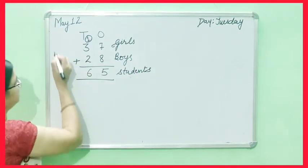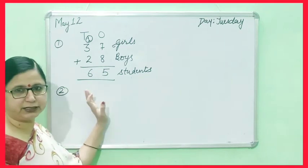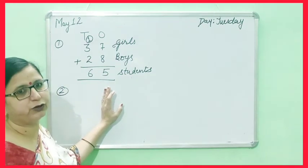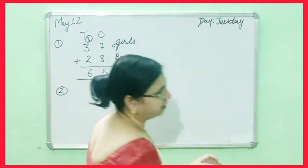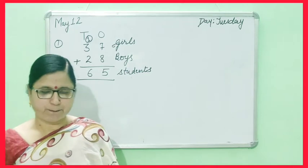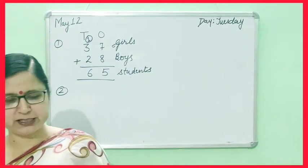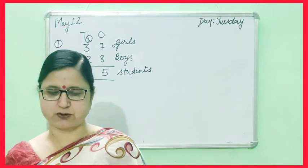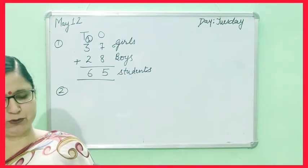Okay, now next one. It has been done in your math book. Now we will do the next one. So read the statement carefully. Neha bought 48 mango toffees and 23 orange toffees. How many toffees did she buy?